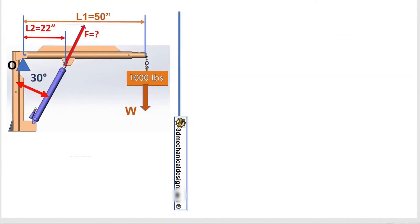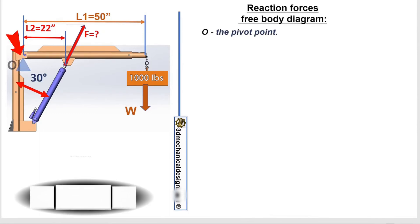First, we draw a reaction force free body diagram. O, the pivot point. F, the point where cylinder force is applied.